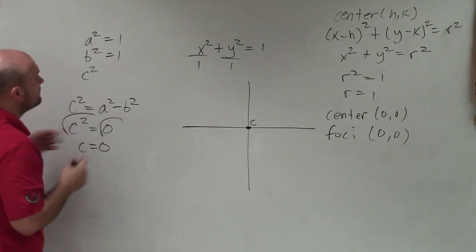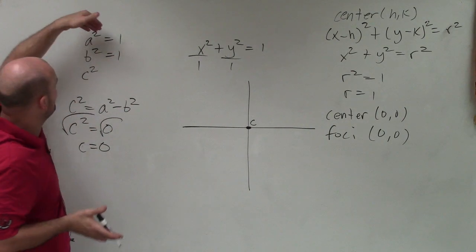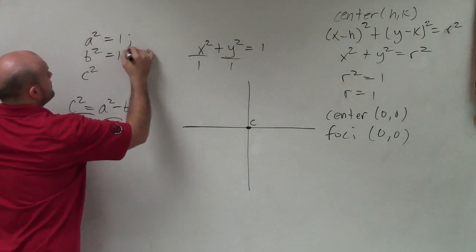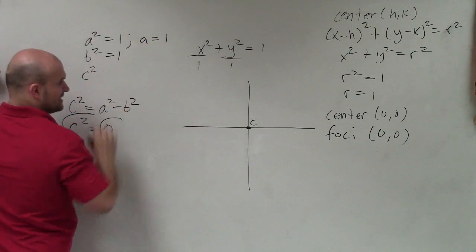All right, now for the vertices, that's going to be my value of a. Again, a equals 1 as I take the square root.